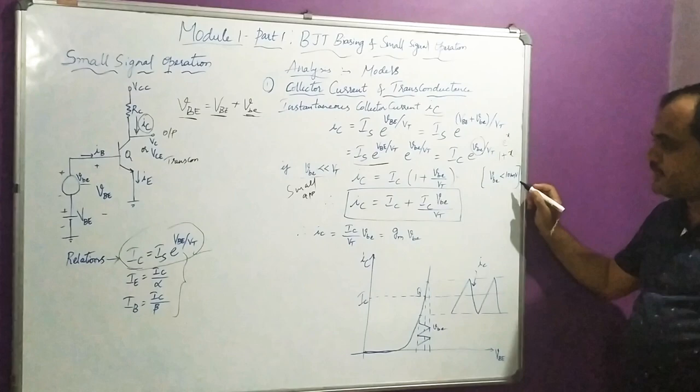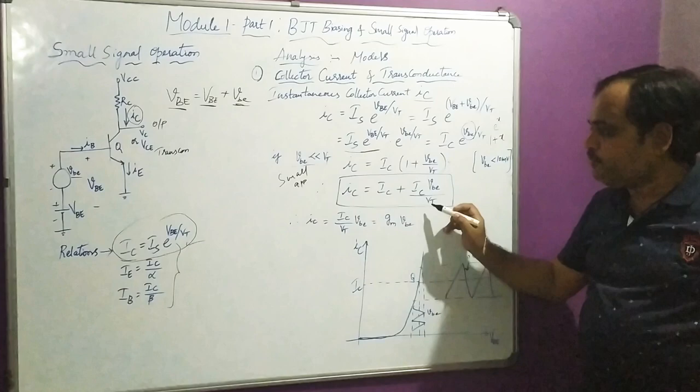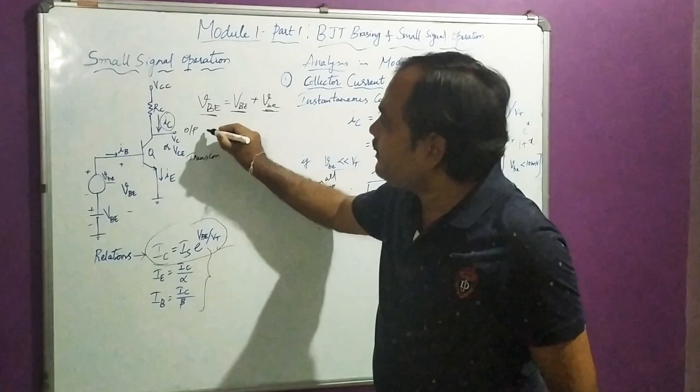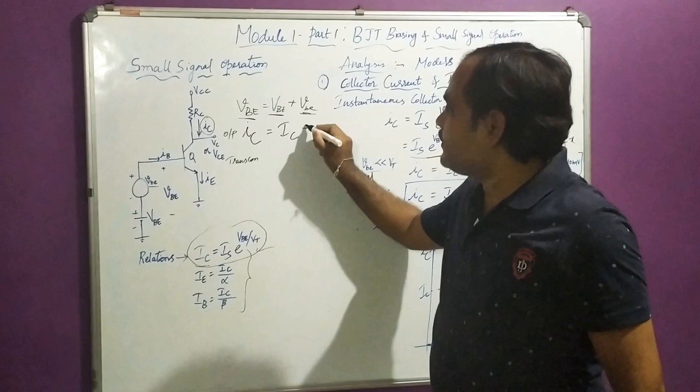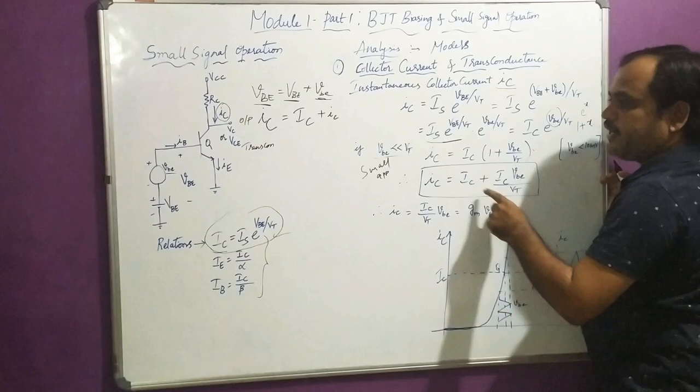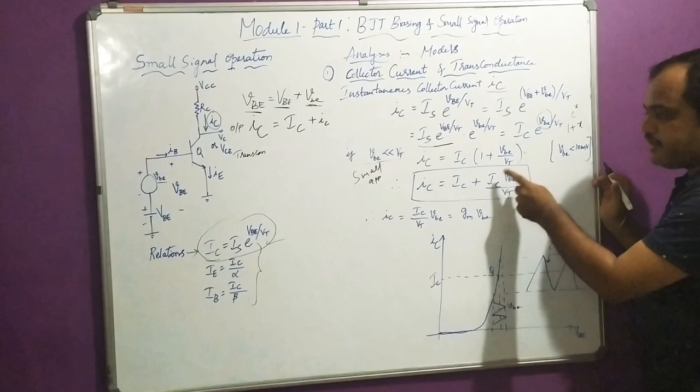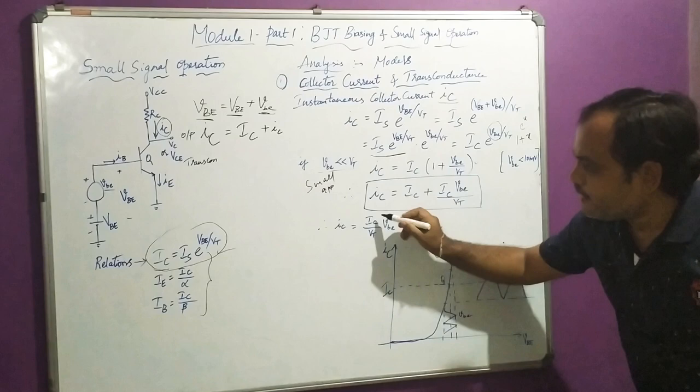Now expanding: IC × (1 + vBE/VT) gives IC + IC × (vBE/VT). Writing the instantaneous collector current equation as small i, capital C = capital IC + small ic. By comparing these two equations, the small signal collector current small ic = (IC/VT) × vBE.